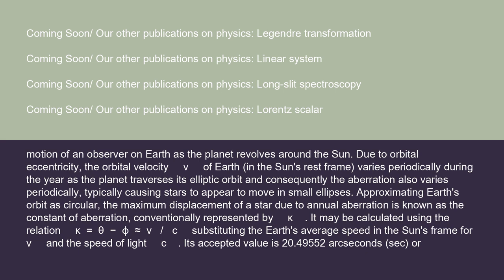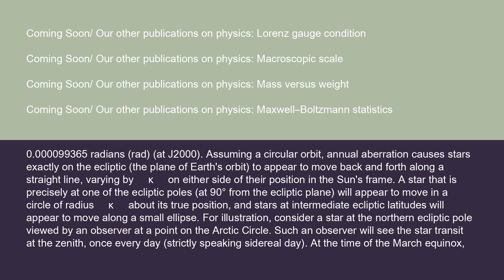The constant of aberration kappa may be calculated using the relation kappa ≈ v/c, substituting the Earth's average speed in the Sun's frame for v and the speed of light c. Its accepted value is 20.49552 arcseconds, or 0.000099365 radians, at J2000. Assuming a circular orbit, annual aberration causes stars exactly on the ecliptic to appear to move back and forth along a straight line, varying by kappa on either side. A star at one of the ecliptic poles will appear to move in a circle of radius kappa about its true position, and stars at intermediate ecliptic latitudes will appear to move along a small ellipse.